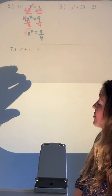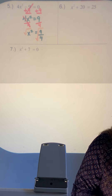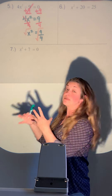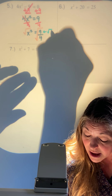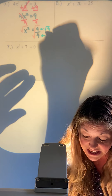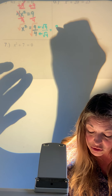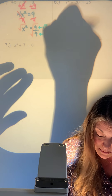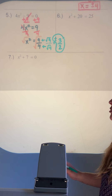Go ahead and square root. When you square root a fraction, you square root the top and square root the bottom separately, then put them back as a fraction. The square root of 9 is 3; the square root of 4 is 2. Don't forget the plus or minus. Final answer: plus or minus 3 over 2.